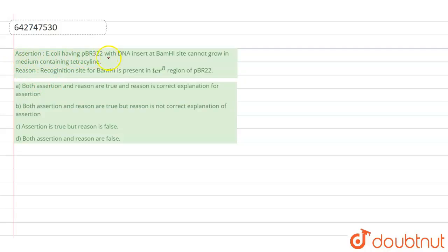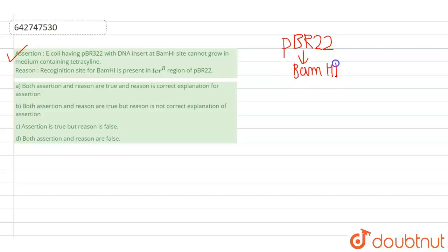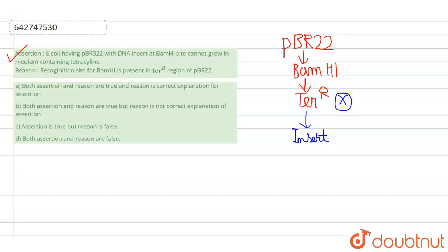The question says: Assertion — E. coli having pBR322 with DNA insert at BamH1 site cannot grow in medium containing tetracycline. This assertion is absolutely correct because in pBR322, the BamH1 site is present on the tetracycline resistance part. If a DNA insert (a piece of foreign DNA) is present, then the tetracycline resistance gene will be inactivated.